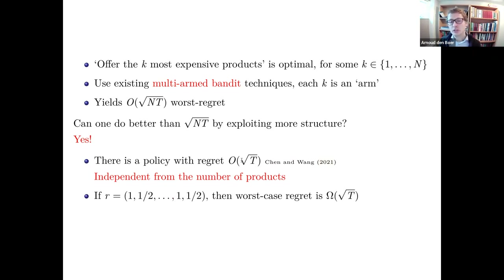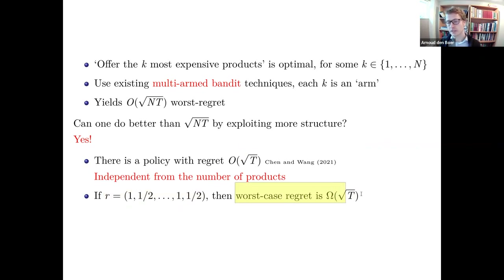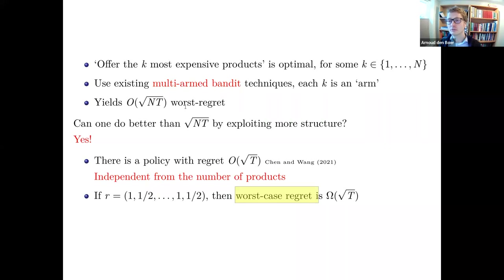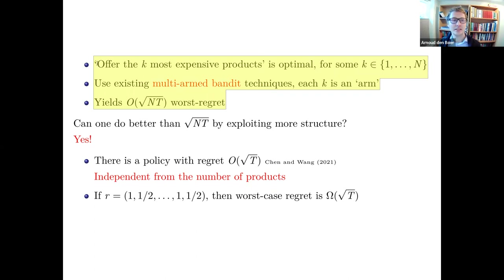Interestingly, this is the assortment optimization problem without capacity constraints — a simpler problem — yet there used to be more literature on the constrained version, perhaps because the unconstrained version seemed easy. Chen and Wang showed you can do much better than the naive multi-arm bandit approach in the unconstrained case, though this was only discovered fairly recently.